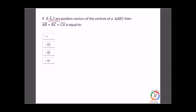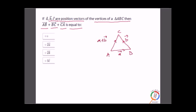If a, b, c are position vectors of vertices A, B, C of a triangle, then AB + BC + CA equals what? We have a triangle ABC where AB = a, BC = b. The vector CA is opposite in direction to AC = a + b, so CA = -(a + b). When we sum all three: AB + BC + CA, since each vector is traversed in opposite directions around the triangle, the sum is zero.